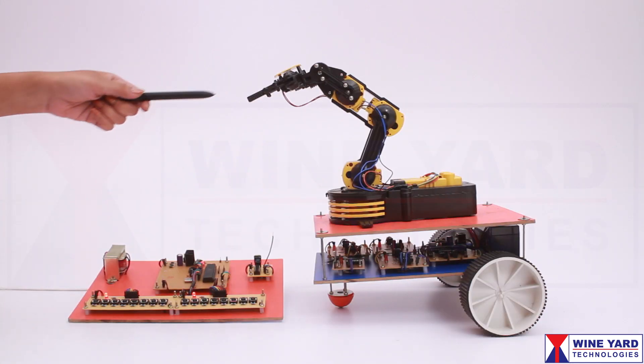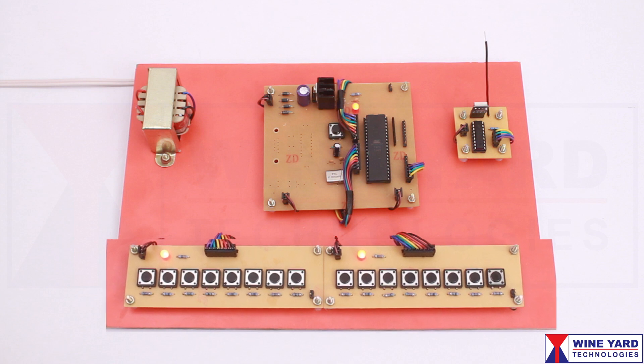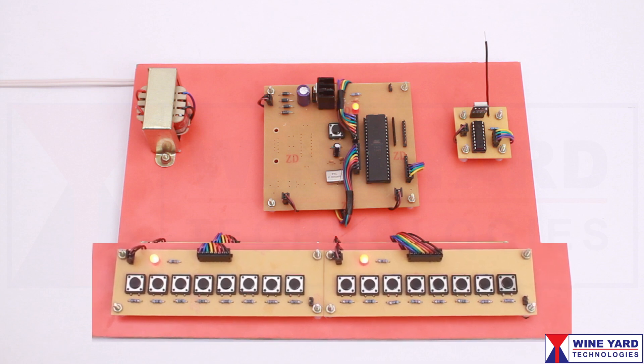This is an RF controlled wireless pick and place robot. This is the transmitter unit. These switches are to control the robotic arm and the movable base.